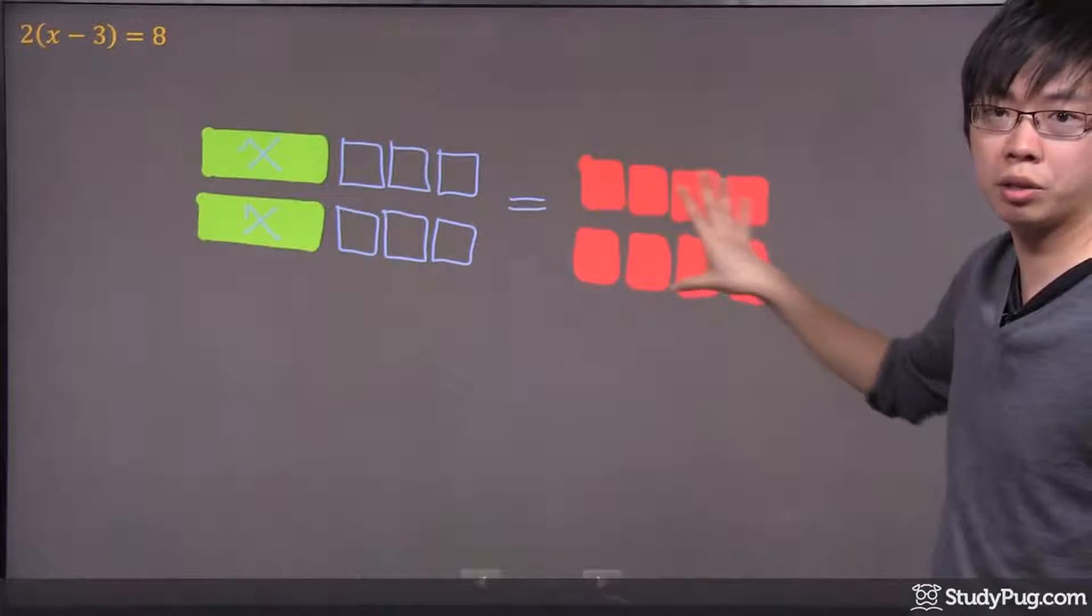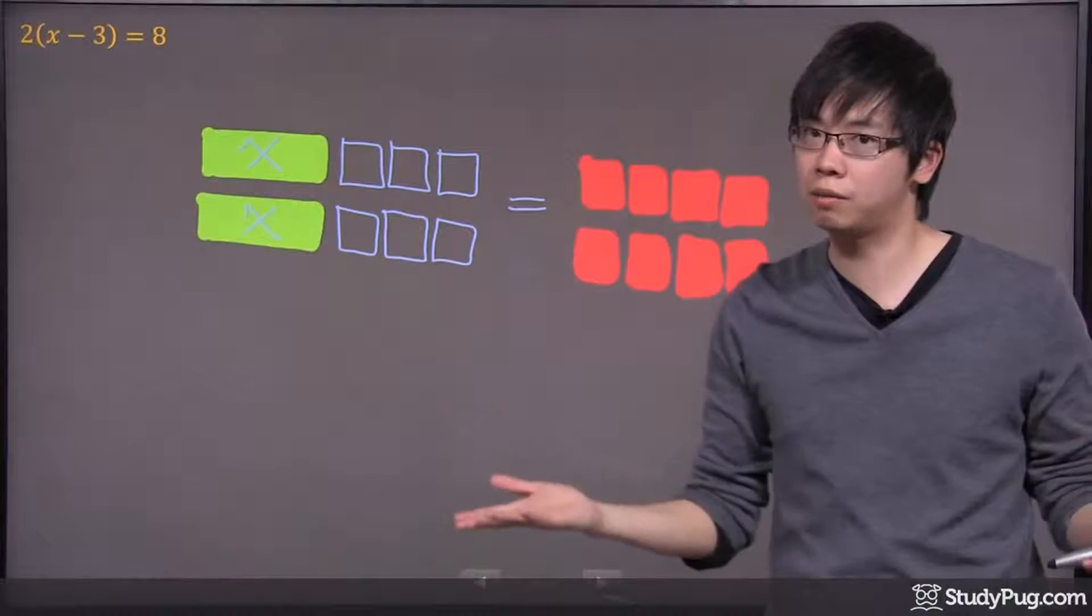Then, it's equal to, there's eight boxes over here shaded in, right? So, it represents positive eight.